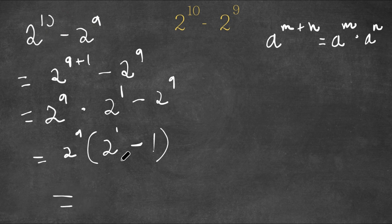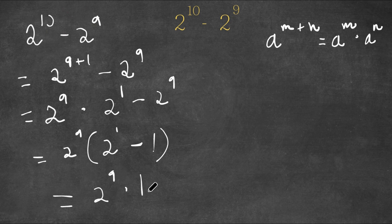And now this is equal to 2 to the power of 1 minus 1, which is simply 1. So I have 2 to the power of 9 times 1, which equals 2 to the power of 9, since anything times 1 is itself.